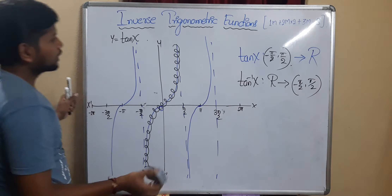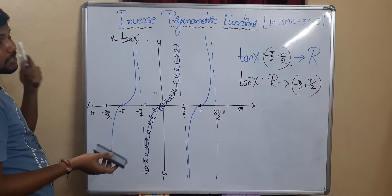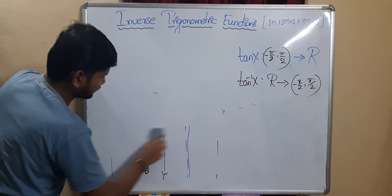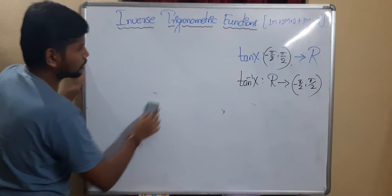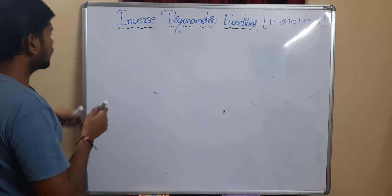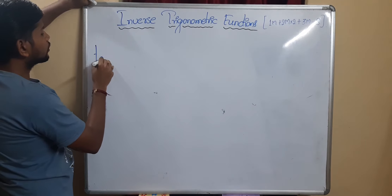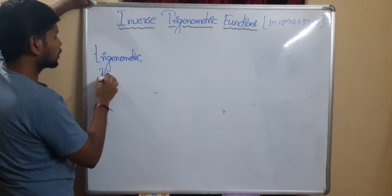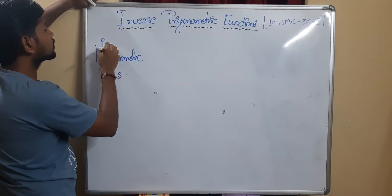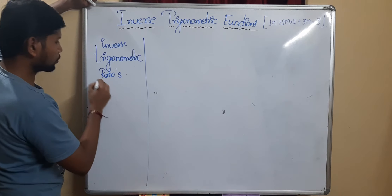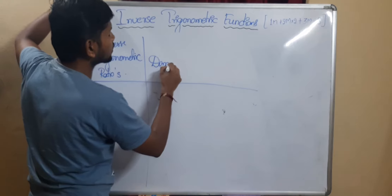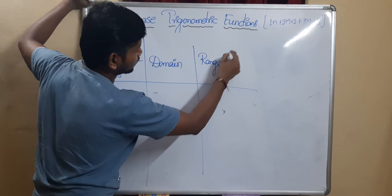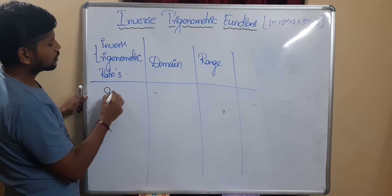You can draw the tan inverse(x) graph very easily now. Instead of taking one more example, I'll give the table and we'll discuss the remaining three later. Now concentrate on the board — it is very simple to understand. Let's look at the inverse trigonometric ratios: the domain and range for each. The first one we studied is sin inverse(x).